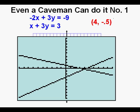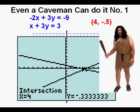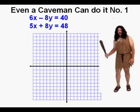We graph by pressing Graph or Zoom 6. Notice how close these lines are to Og's original graphing. We find the solution by pressing 2nd Trace 5, Enter, Enter, Enter, and we get 4 comma negative 1/3 — very close to Og's calculation. Og has really distinguished himself and is proving worthy of the amenities of the 21st century.